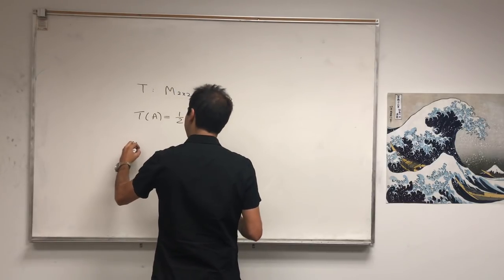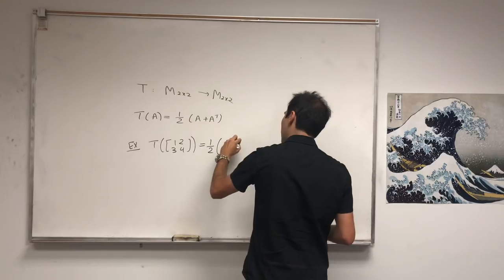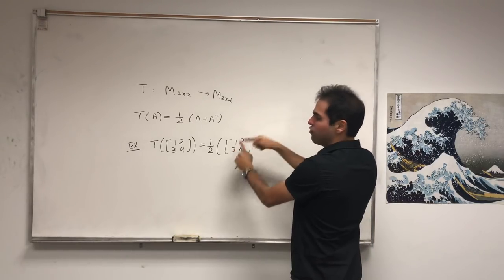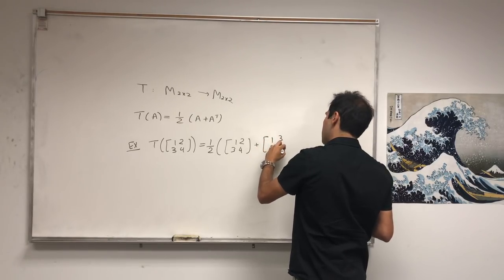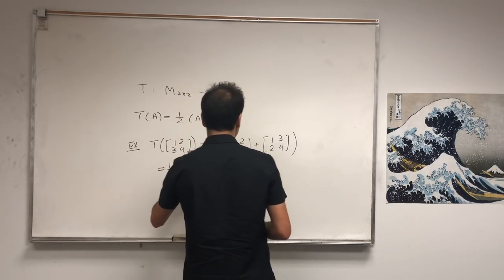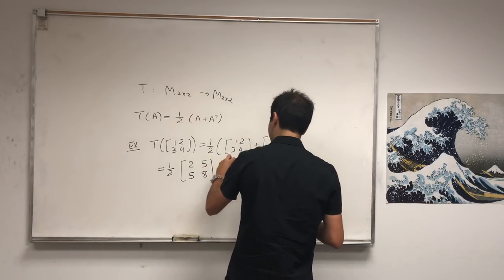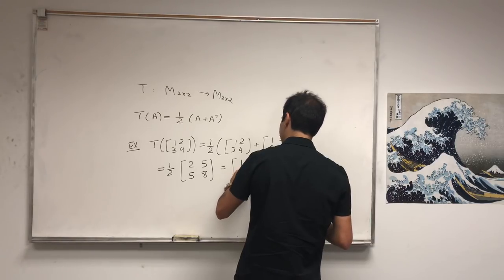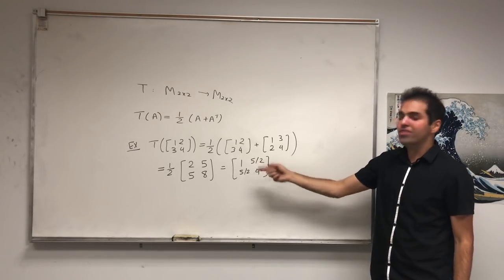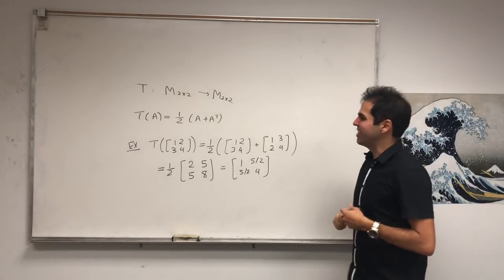Here's just one example. Let's say T of the matrix [1, 2; 3, 4]. That's one-half times [1, 2; 3, 4] plus its transpose, and transpose just means you flip it along the diagonal, so [1, 3; 2, 4]. That becomes one-half of [2, 5; 5, 8], which is [1, 5/2; 5/2, 4]. Notice what's cute — it turns out it's a symmetric matrix, and that's why it's called symmetrization of a matrix.